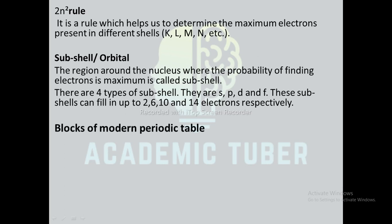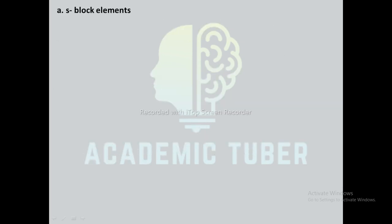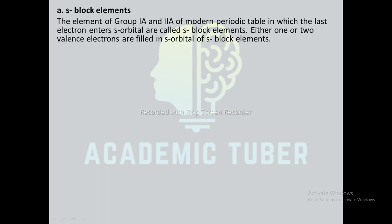Blocks of the modern periodic table: according to the filling of electrons in the sub-shell, the elements of the periodic table are divided into four blocks: s block, p block, d block, and f block. S block elements: the elements of group 1A and 2A of the modern periodic table in which the last electron enters the s orbital are called s block elements. Either one or two valence electrons are filled in the s orbital of s block elements.